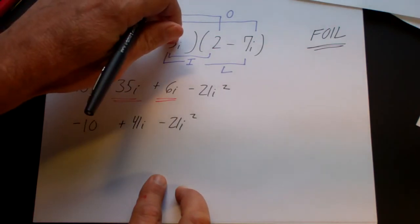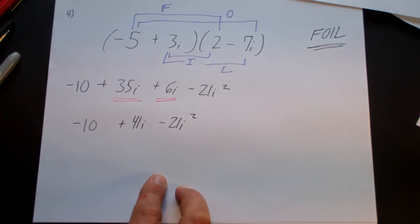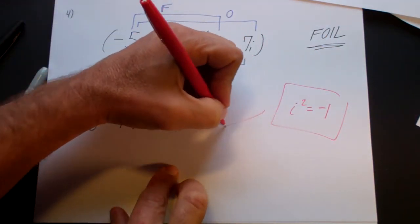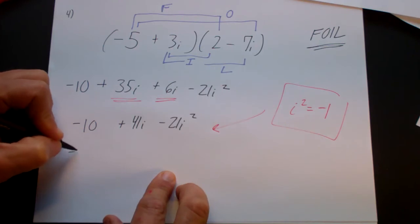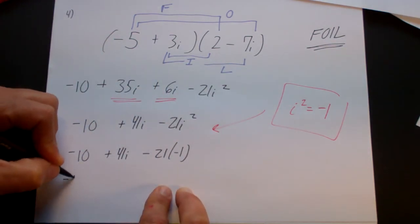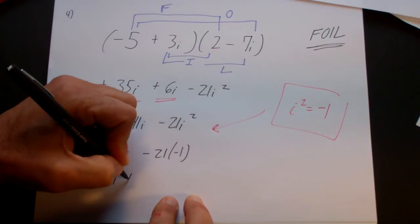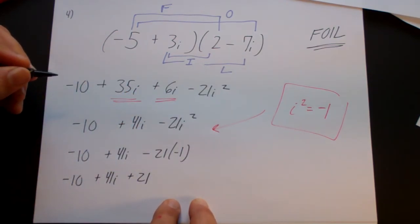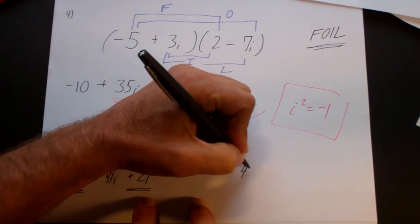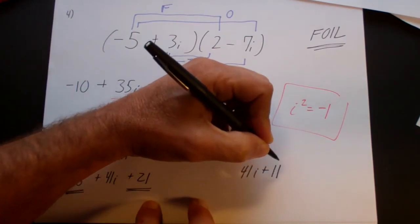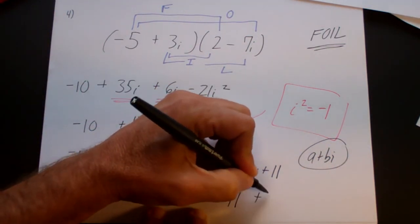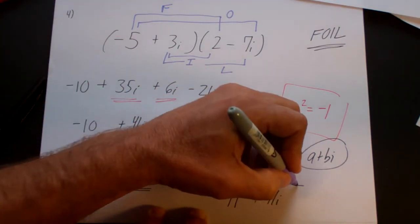The first step is to pretend that i is a variable and treat it just like x. Then once you get i squared, remember that i squared is minus 1 and plug that in. So you have minus 10 plus 41i minus 21 times negative 1, which is minus 10 plus 41i plus 21. Combining like terms, minus 10 and positive 21 give positive 11. Writing in a plus bi form with the real part first, the final answer is 11 plus 41i.